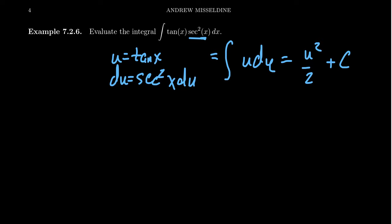And then substituting back in that u equals tangent, we end up with 1 half tangent squared x plus a constant. And so we see that the anti-derivative would be this function right here. That's pretty simple, right?